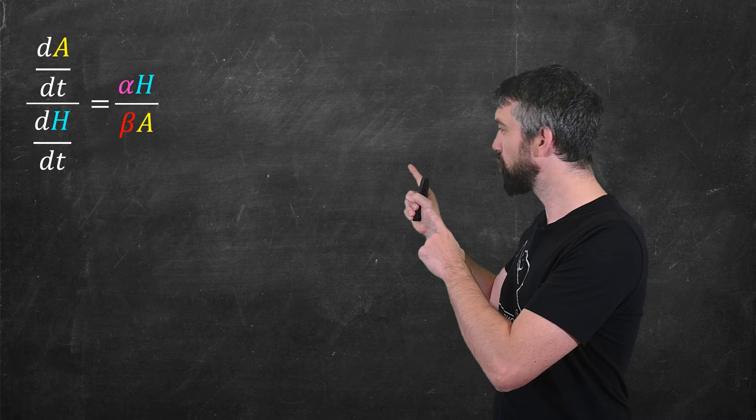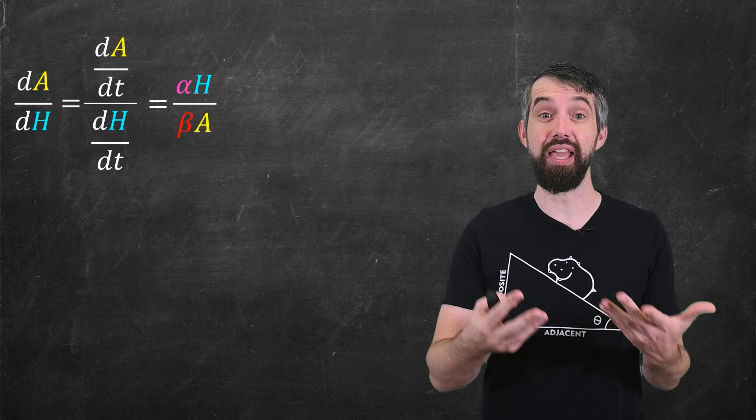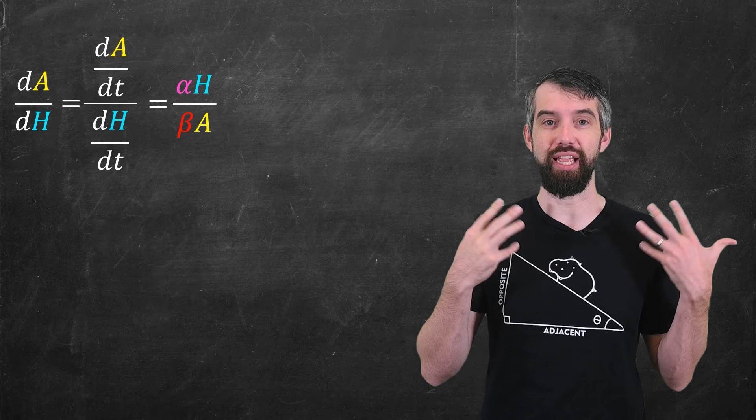For this quotient of two different rates of change, I can rewrite that as just the derivative of A with respect to H. This is just chain rule. And it's what I mean when I say that I'm eliminating the explicit dependence on time.